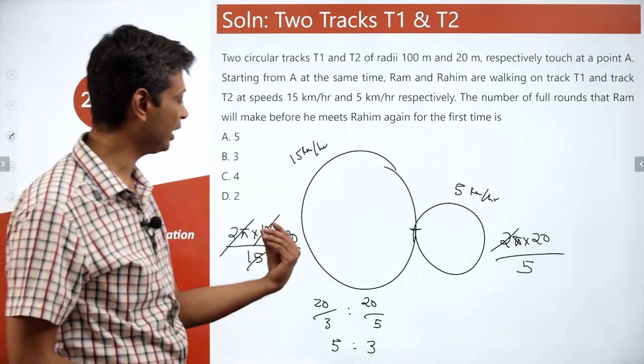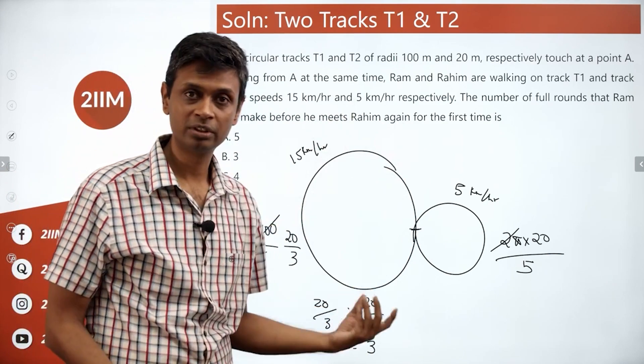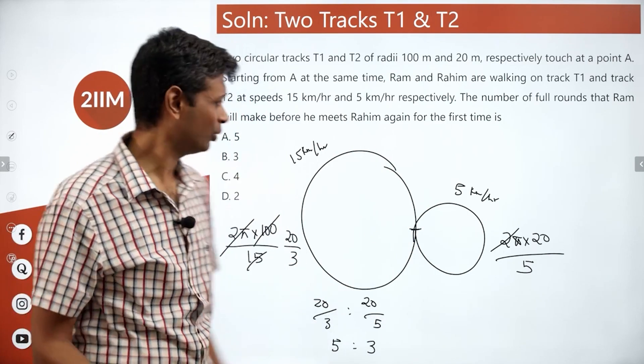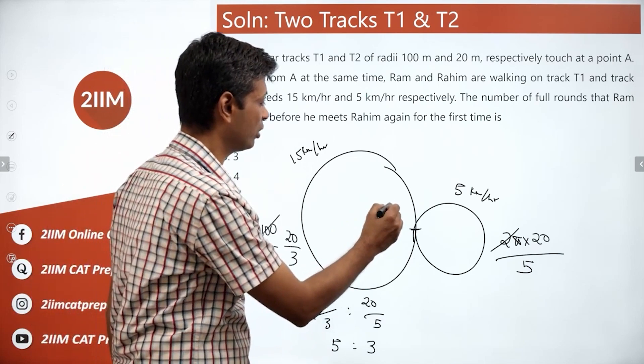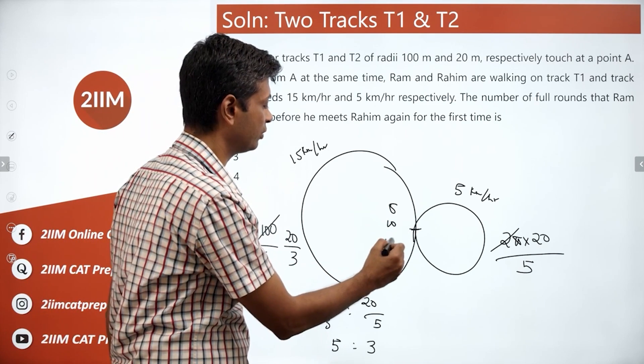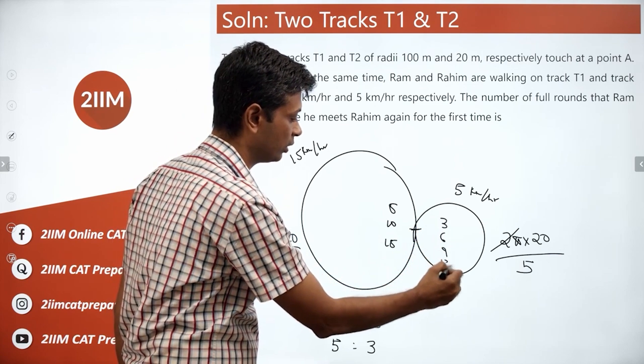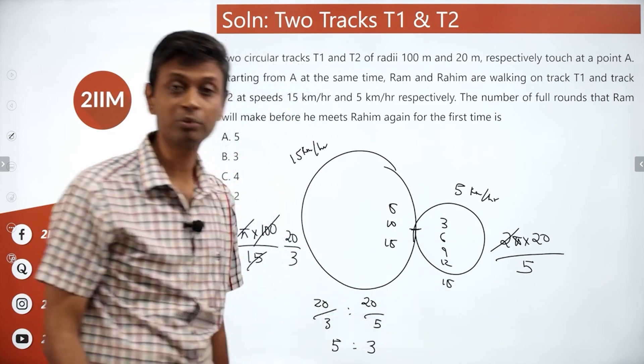If Ram takes some 5 units, Shyam will take 3 units. Call that as units. You don't care. So, Ram will come at 5 units here, at 10 units here, at 15 units here. Shyam will come at 3 units, 6 units, 9 units, 12 units, 15 units. Why am I stopping at 15?